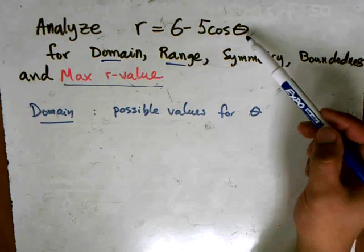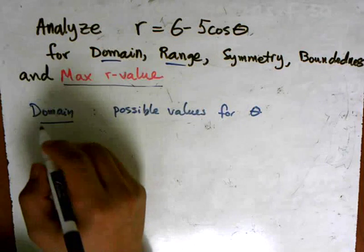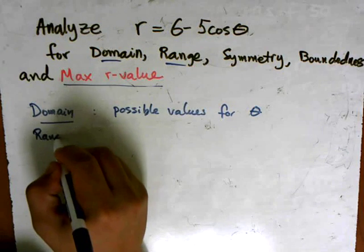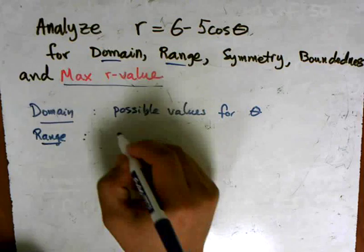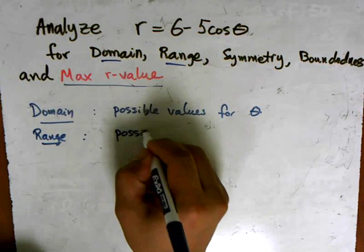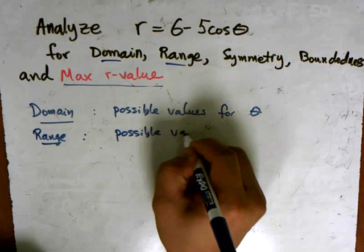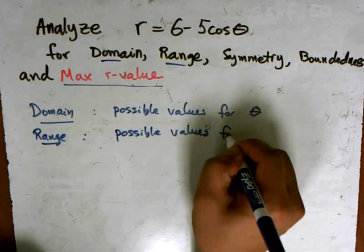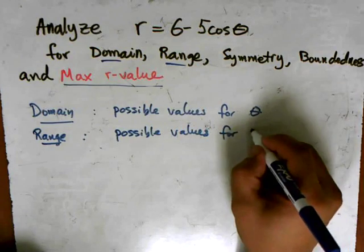So the input here is θ and the output is r, or the radius. So the range here would be possible values for r.